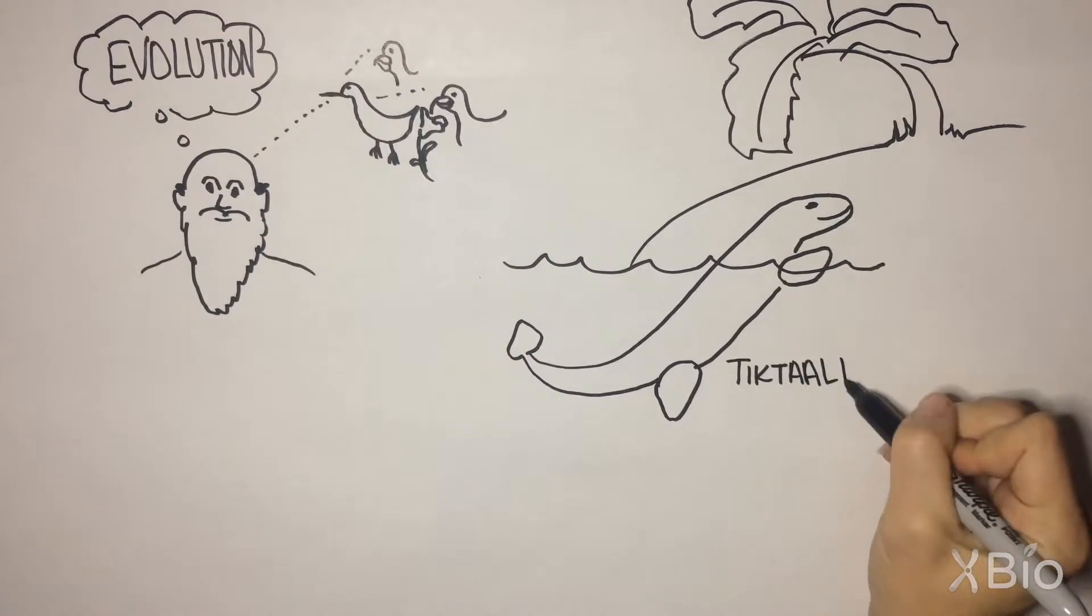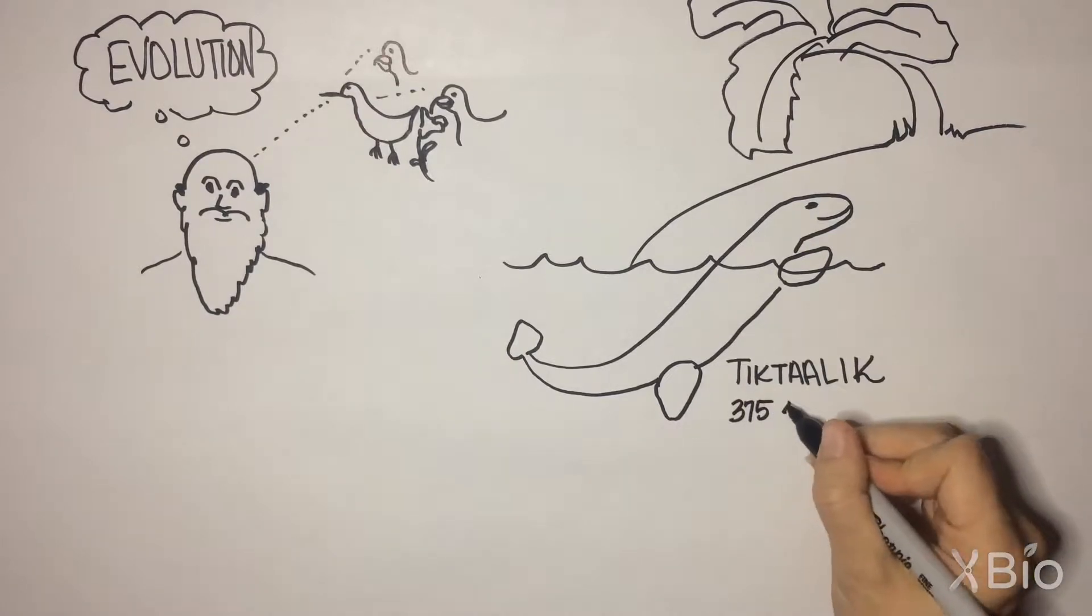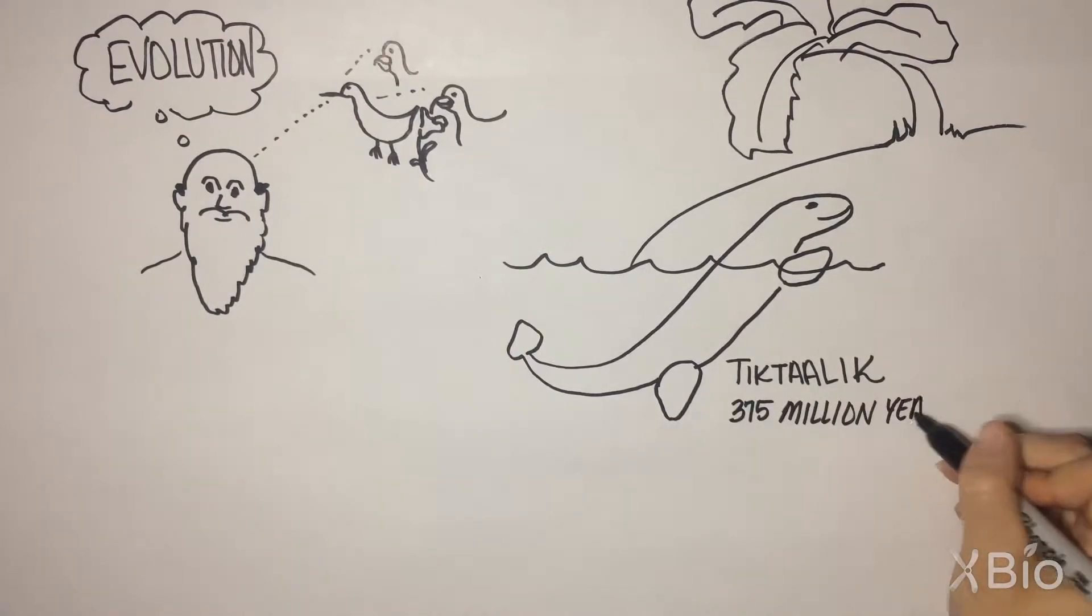Tiktaalik is thought to represent the evolutionary transition from fish to amphibians about 375 million years ago.